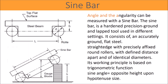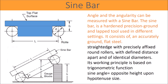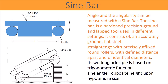Angle and angularity can be measured with a sine bar. The sine bar is a hardened precision round and lapped tool used in different settings. It consists of an accurately ground flat steel straight edge with precisely affixed round rollers, with a defined distance apart and of identical diameters. Its working principle is based on trigonometric functions — sine of the angle equals the opposite height divided by the hypotenuse size.